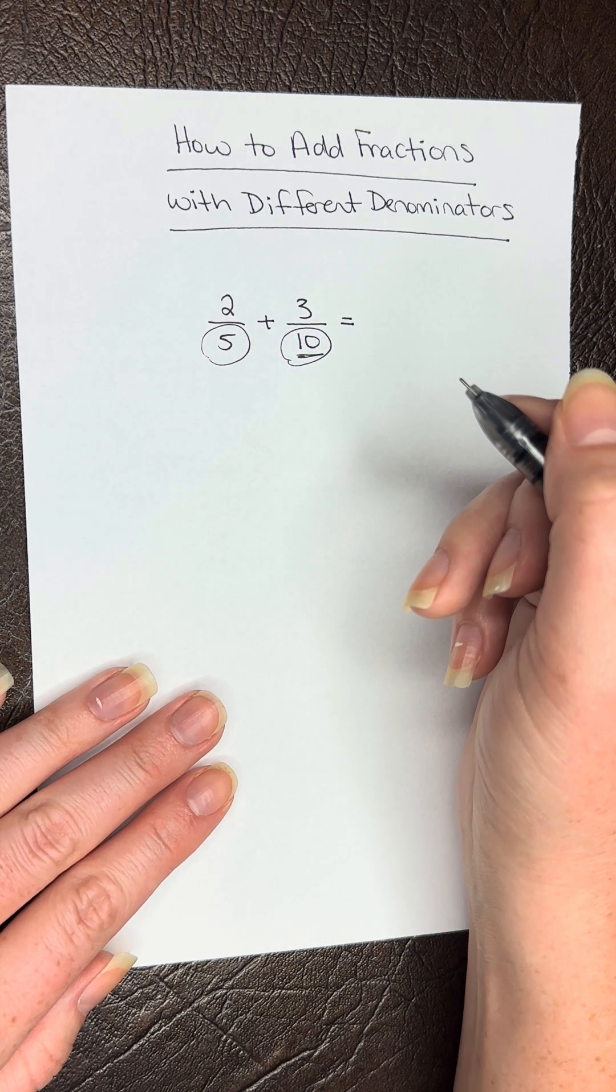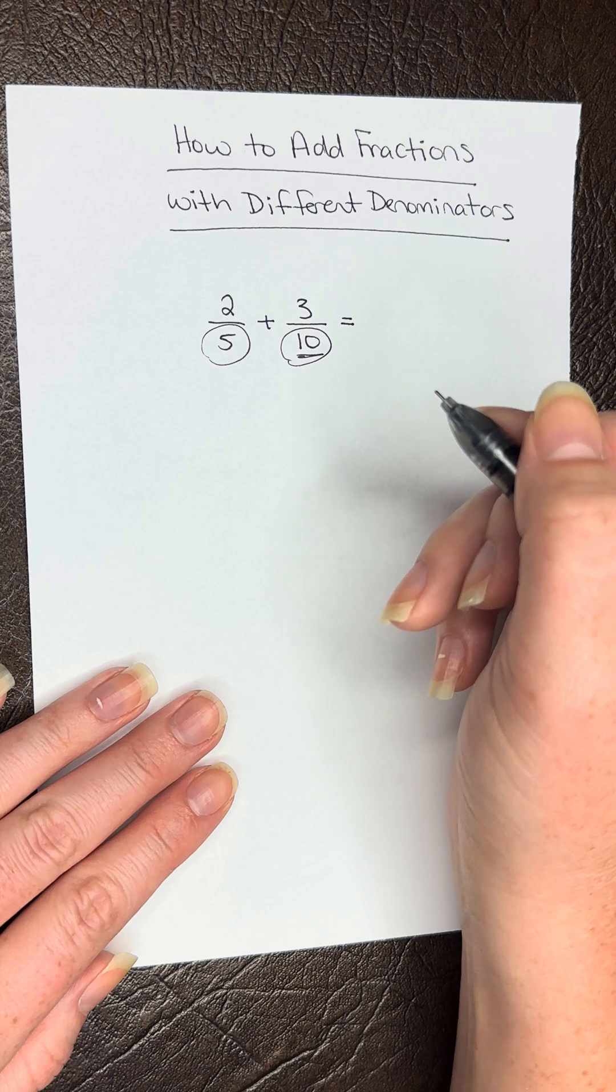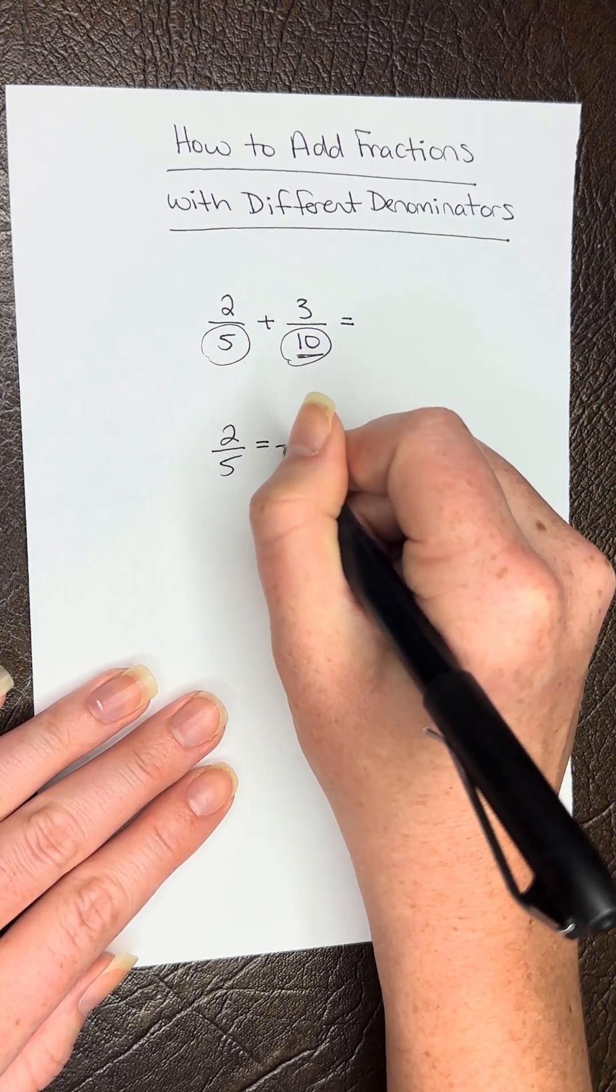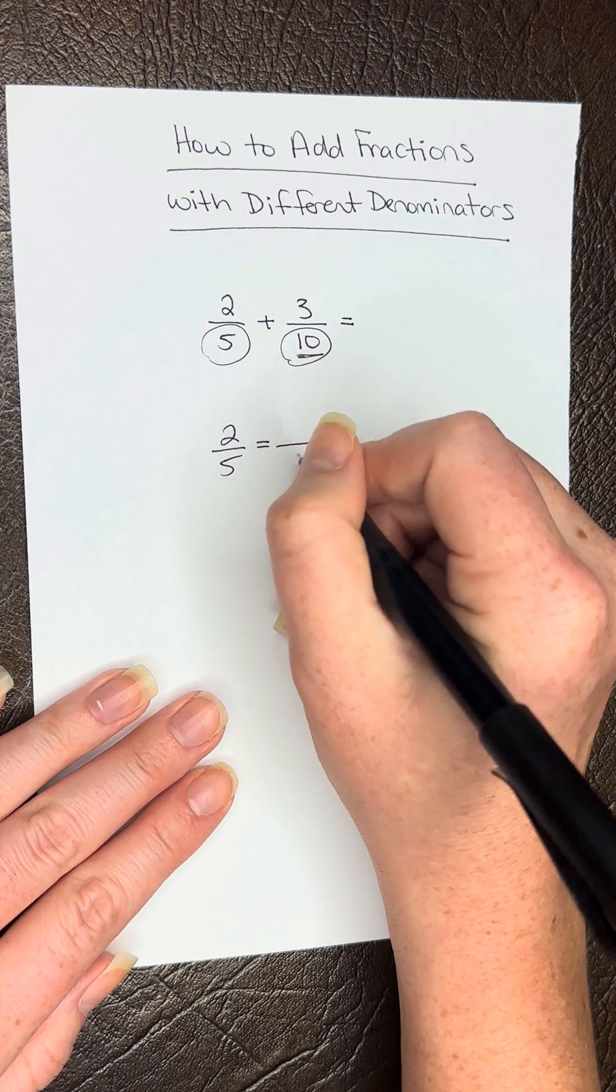We need to rewrite each fraction with the same denominator. So we have 2/5 equals what over 10?